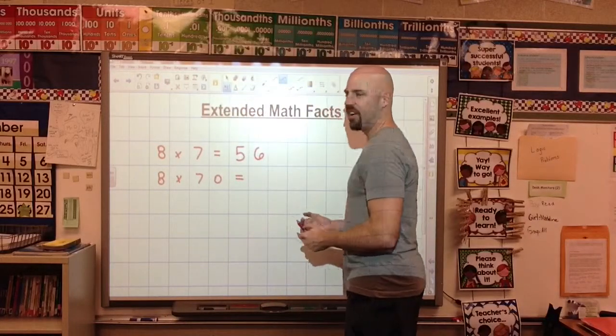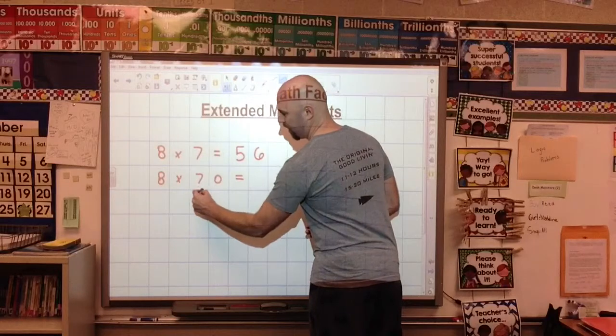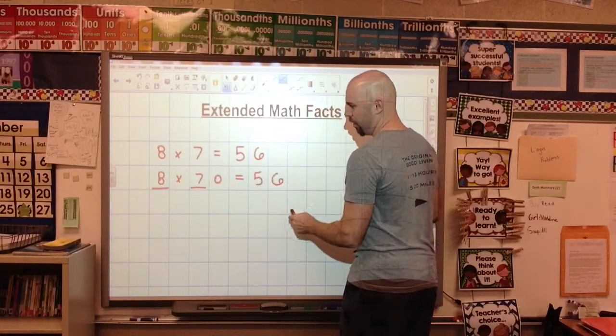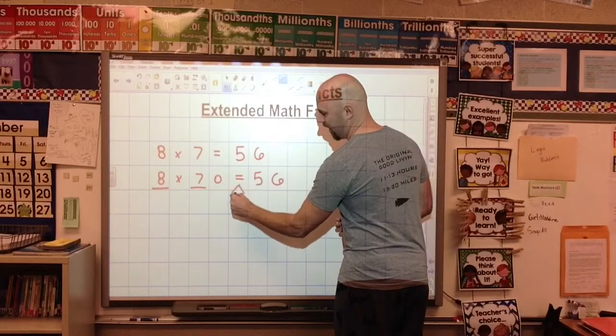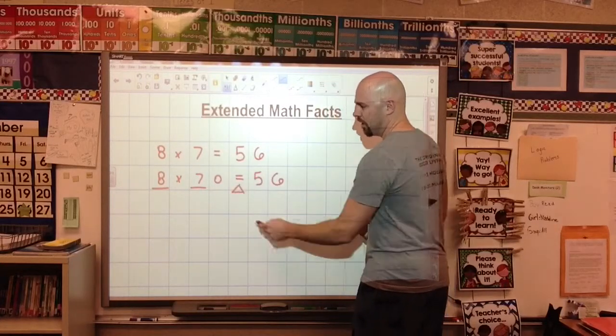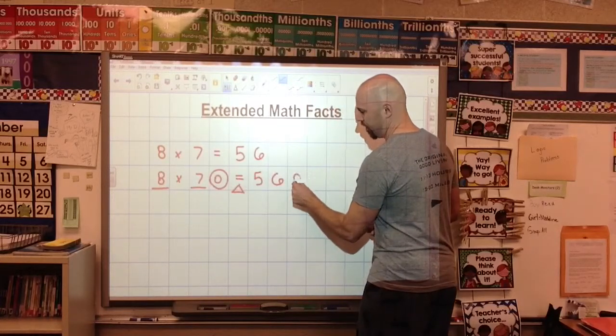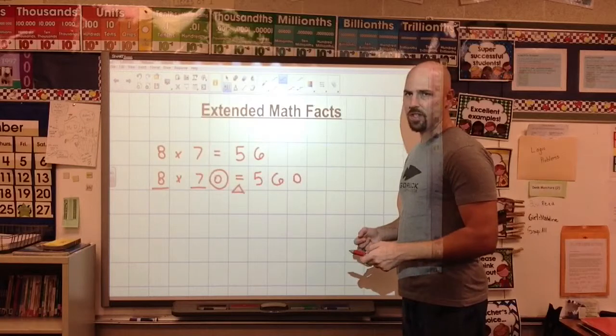What we look at is we find the math fact. 8 times 7 is 56. And then we think about it like a teeter-totter. We've got to put some balance to it. I have a 0 right here, I need to put a 0 over here. So 8 times 70 would be 560.